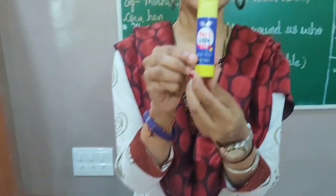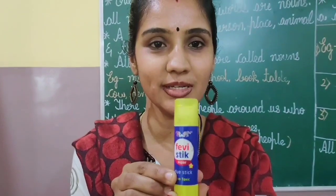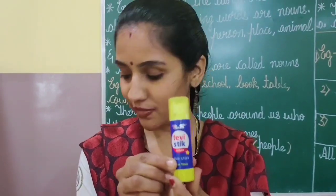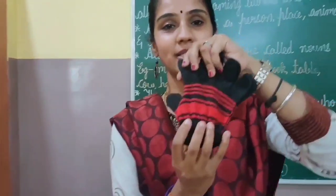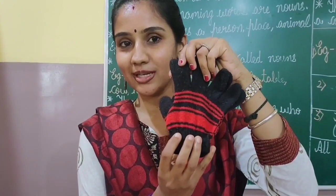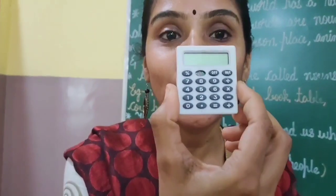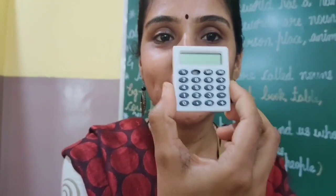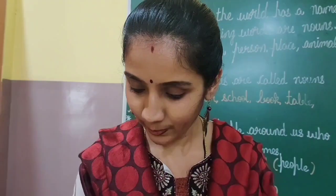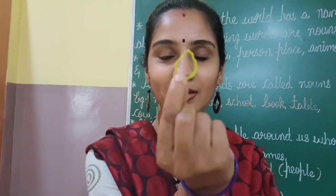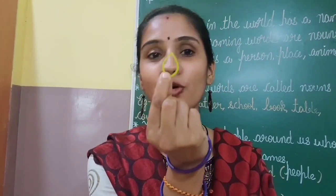What is this? A Fevi stick. What is this? Gloves. What is this? A calculator. What is this? This is a rubber band, used for notes — a rubber band.